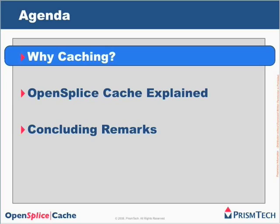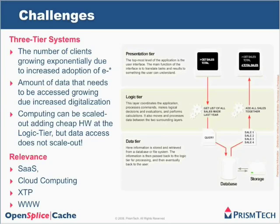First, I'd like to go through the rationale of why we need caching — which application domains need caching the most, what are the use cases, and what problems it solves. Then, once we are done with that, I will go through some of the key concepts behind OpenSplice Cache — what it provides and how it does it and why it's so unique. Then we will try to conclude. So let's start off with the challenges and the motivations — why do we need caching today?